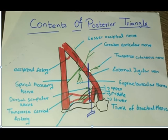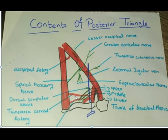In the occipital triangle there are also some muscular branches. Two small branches are given to the levator scapulae, which is present in the floor of the posterior triangle. Two small branches are also given to the trapezius muscle, and the nerve to rhomboideus muscle can also be seen. C5 and C6 roots of the brachial plexus are also seen in the contents of the posterior triangle.